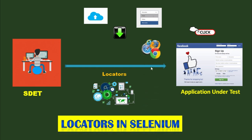In test automation, locators play a major role. The locators must be supported by the different browsers. Sometimes it happens that you have written locators in Chrome browser, but when you run your application in Mozilla Firefox or Edge browser, the locators will fail and you will get null or 'no such element' exceptions. I am going to help you resolve all these issues.